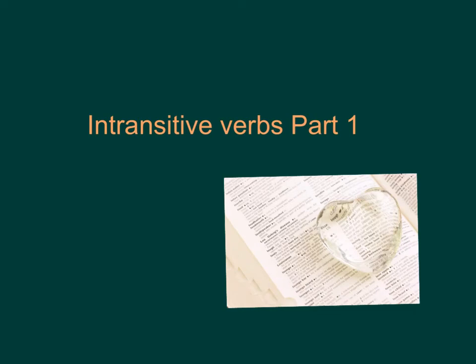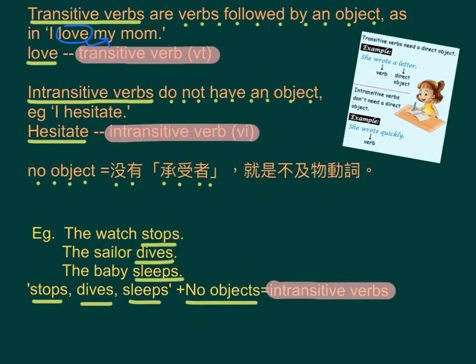Intransitive Verbs, Part 1. Transitive verbs are verbs followed by an object. As in: 'I love my mom.' Here, 'love' is a transitive verb.